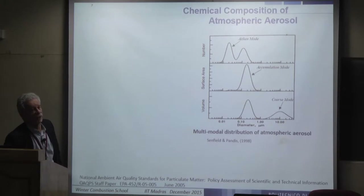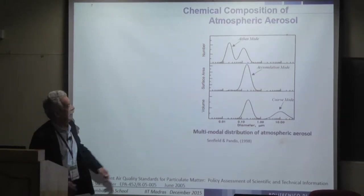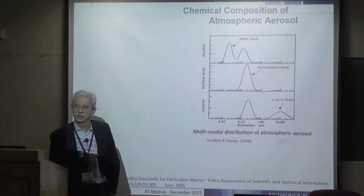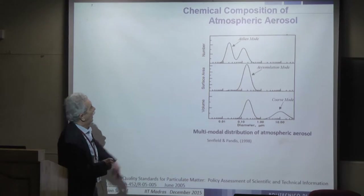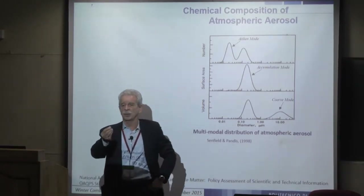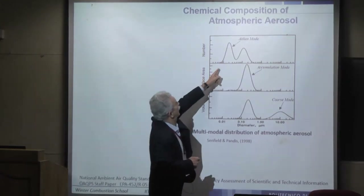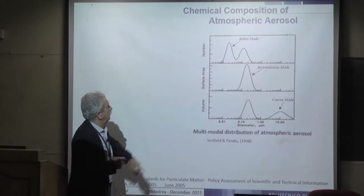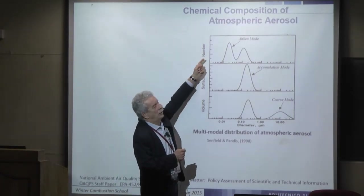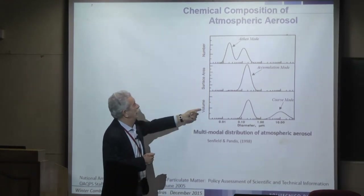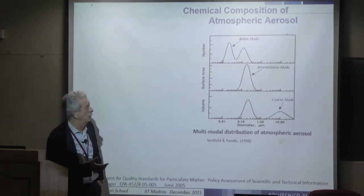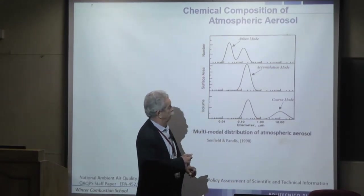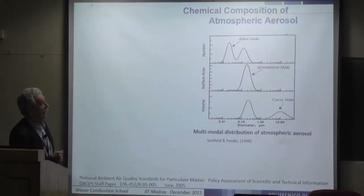If we analyze the atmospheric particle number distribution, we see two peaks around 20 and around 100 nanometers. The dominant particle count is in these fine ranges. However, if we average in terms of mass or volume, then coarse particles — around one to ten microns — dominate.